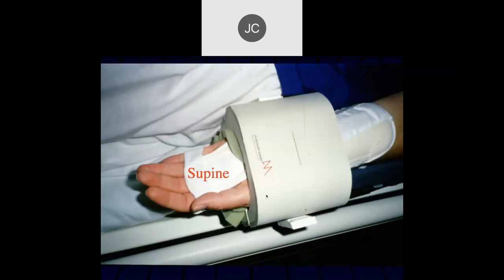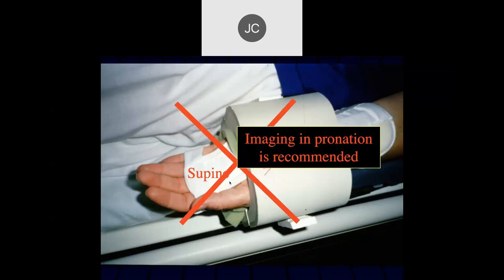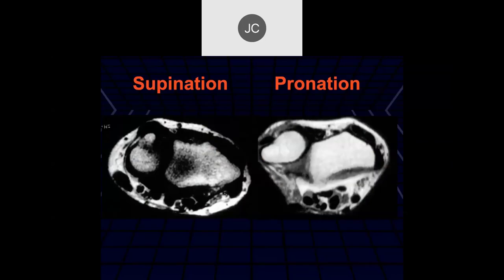An old coil required you to place the patient supine — that is palm up — which I think is really inadequate scanning, and sometimes you even have to bring the patient back if you image in the supine position. Remember that the ulna is the fixed bone in the wrist, and the radius rotates around the ulna when you go from pronation to supination.